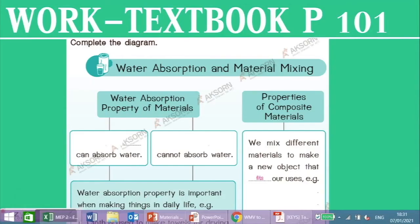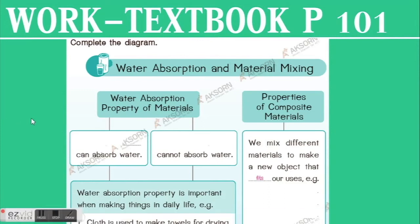Excellent. Now take out your work textbook and prepare your pen or pencil. Let's do some practice together. Open your work textbook to page 101. We will complete the diagram on water absorption and material mixing. Look at the left side of the sheet: water absorption property of materials. Cloth and paper can absorb water. Think of some objects that cannot absorb water.